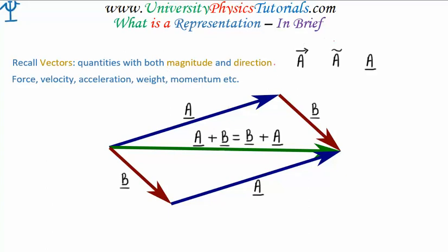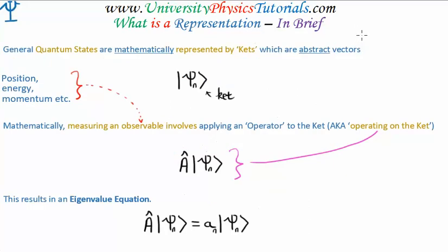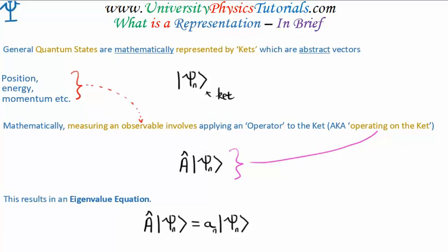General quantum states or quantum state vectors are mathematically represented by things which we know as kets. And kets are abstract vectors. In the centre of your screen, I have the ket psi — in fact, psi sub n. This is an abstract quantum state or our quantum state vector. There are other words which we can use to describe this, but for the moment, we'll say it's either a ket or a quantum state vector. It's important to know that these kets are abstract vectors — they don't behave in the same way that the normal vectors you're used to do. They behave differently than forces, velocities, accelerations, and so on.